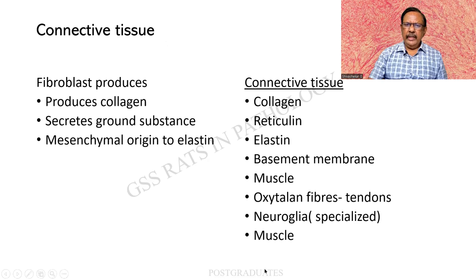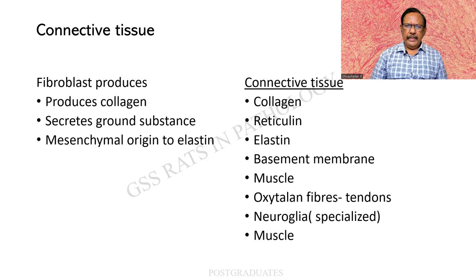Coming again to the list of the connective tissues — these are mandatory to be remembered: collagen, reticulin, elastin, basement membrane, muscle, oxytalon fibres which are the tendons, neuroglia (specialized), and muscle — also a form of specialized connective tissue. So these things we should have in mind. There will be an epithelium, a connective tissue, and then the bone and others.